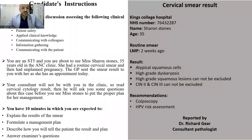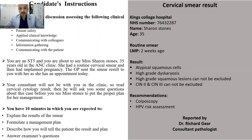So during the 10 minutes of the station, you are expected to explain the results of the smear and to formulate a management plan, describe how you will tell the patient the results of the smear, and then answer the examiner's questions. According to the smear, it was a routine smear for Ms. Sharon Stones, 35 years old. Her last period was two weeks ago. The result came as atypical squamous cells, high-grade dyskaryosis, high-grade squamous lesions cannot be excluded, CIN2 or 3 cannot be excluded, and the recommendation for colposcopy and HPV risk assessment.